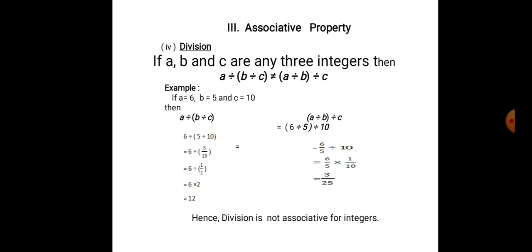Now, let us check whether division satisfies the associative property or not. If a, b and c are any three integers, then a divided by (b divided by c) is not equal to (a divided by b) divided by c. If a is 6, b is 5 and c is 10, then a divided by (b divided by c) is equal to 6 divided by (5 divided by 10). 5 by 10 is 1 by 2. So, 6 divided by 1/2 is equal to 6 into 2, which is 12.